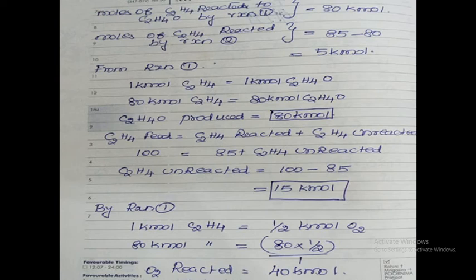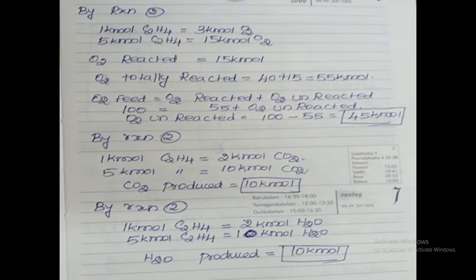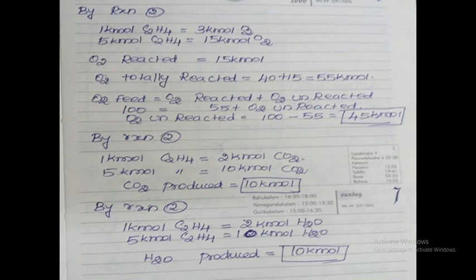Next, unreacted oxygen. By reaction 1: 1 kilomole of ethylene requires ½ kilomole of oxygen. So 80 kilomoles of ethylene reacted means oxygen reacted = 80 × (1/2) = 40 kilomoles. By reaction 2: 1 kilomole of ethylene requires 3 kilomoles of oxygen. With 5 kilomoles of ethylene reacted, oxygen reacted = 3 × 5 = 15 kilomoles. Total oxygen reacted = 40 + 15 = 55 kilomoles.